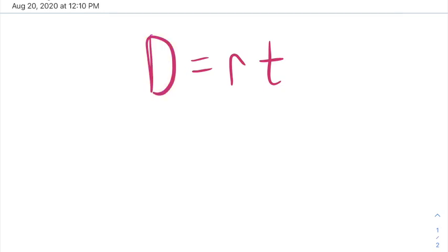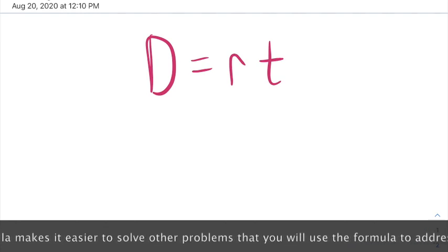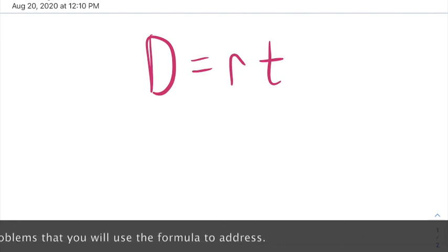However, sometimes you know the distance and the rate, and you'd really like to know the time. Other times you know the distance and the time, and you'd really like to know the rate. So it would benefit us to be able to rewrite this equation to isolate a different variable.